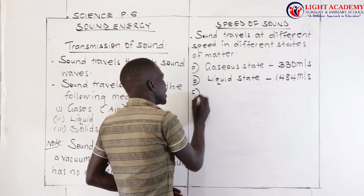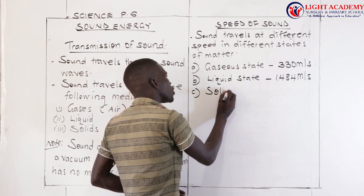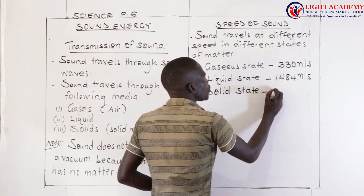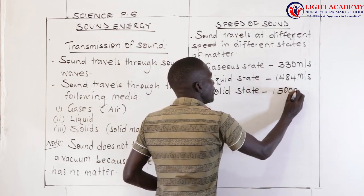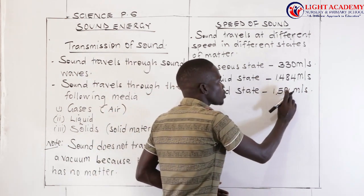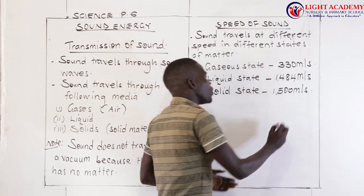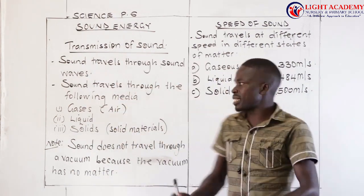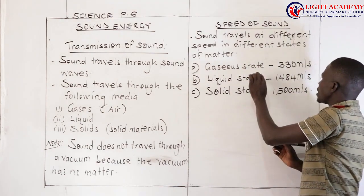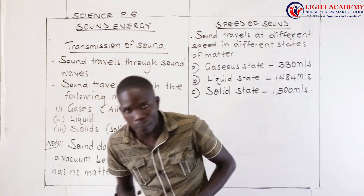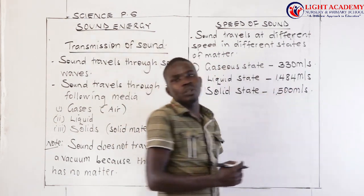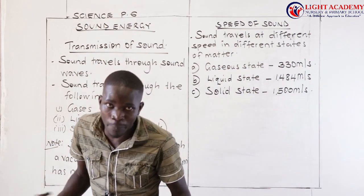Let us look at another state of matter — the solid state of matter, or solid material. In the solid state, sound travels at 1,500 meters per second. So when you look at this: in gaseous state it is 330 meters per second, in the liquid state it is 1,484 meters per second, and in the solid state it is 1,500 meters per second. We can come up with a conclusion.